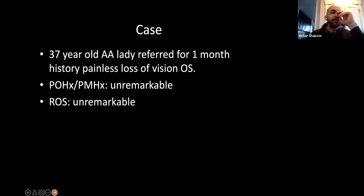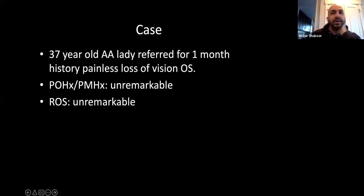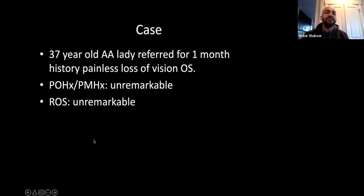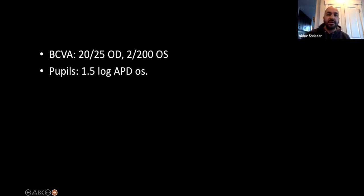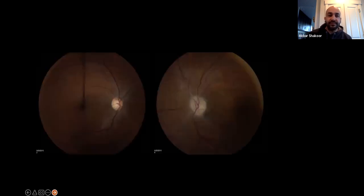I'll start with a case — this is an interesting one, not necessarily pan-uveitis to begin with, but illustrative. This is a 37-year-old African-American lady who was referred for a month's history of painless loss of vision. She's 20/200 in her left eye and has a pretty big APD in the left eye.